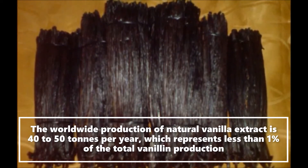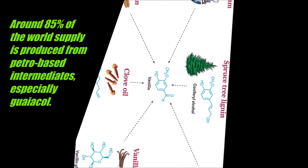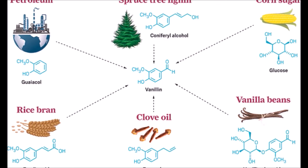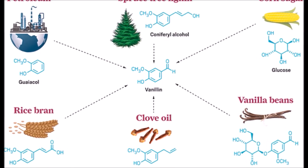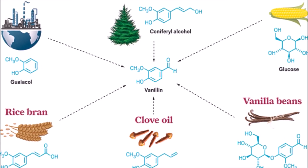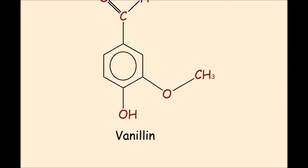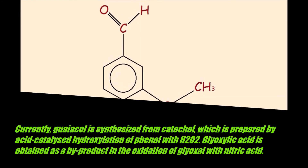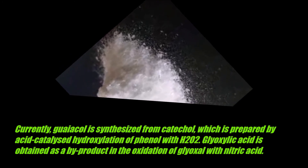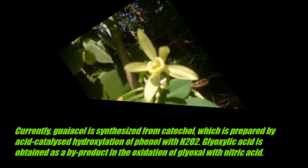The worldwide production of natural vanilla extract is 40 to 50 tons per year, which represents less than 1% of the total vanillin production. Around 85% of the world supply is produced from petro-based intermediates, especially guaiacol. Vanillin is produced by condensation of guaiacol with glyoxylic acid, followed by oxidation of the resulting mandelic acid to the corresponding phenylglyoxylic acid, and finally decarboxylation. Currently, guaiacol is synthesized from catechol, which is prepared by acid-catalyzed hydroxylation of phenol with H2O2. Glyoxylic acid is obtained as a byproduct in the oxidation of glyoxal with nitric acid.